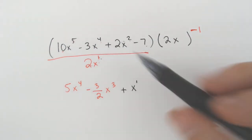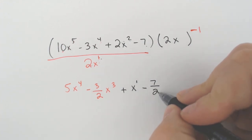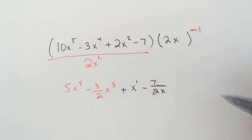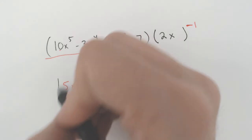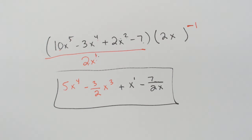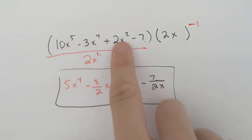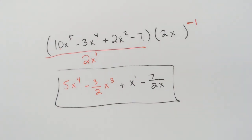7 divided by 2 doesn't divide. So you can write minus 7 over 2. And the x also didn't divide. So we keep dividing by the x. And that, ladies and gentlemen, is how you divide a polynomial, many things, by one thing, which is a monomial.